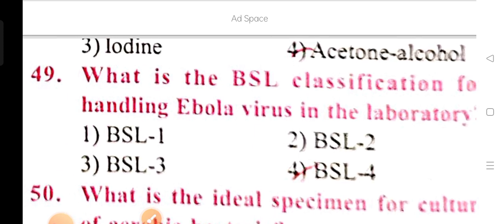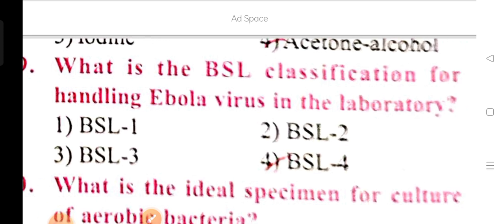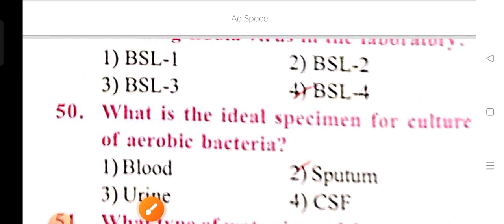What is the BSL biosafety level classification for handling Ebola virus in the laboratory? BSL is biosafety level. Options are BSL-1, BSL-2, BSL-3, and BSL-4. BSL-4 is the correct answer for handling Ebola virus in the laboratory.